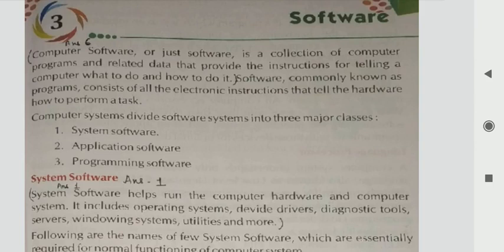Computer program mein software kya hota hai — jo bhi data, related data hote hai, jo bhi instruction hum computer ko dete hai, usse related data usme hote hai. Computer ko kya karna hai aur how to do it — ye electronic instructions hote hai jo hardware ko batate hai how to perform a task.